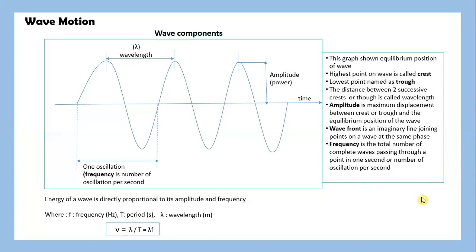To calculate the energy of a wave is directly proportional to its amplitude and frequency. Where f is frequency in hertz, T represents period in seconds, and lambda is wavelength in meters. So v equals to alpha divided by time, and you can cross multiply to get v equals lambda times f for frequency.